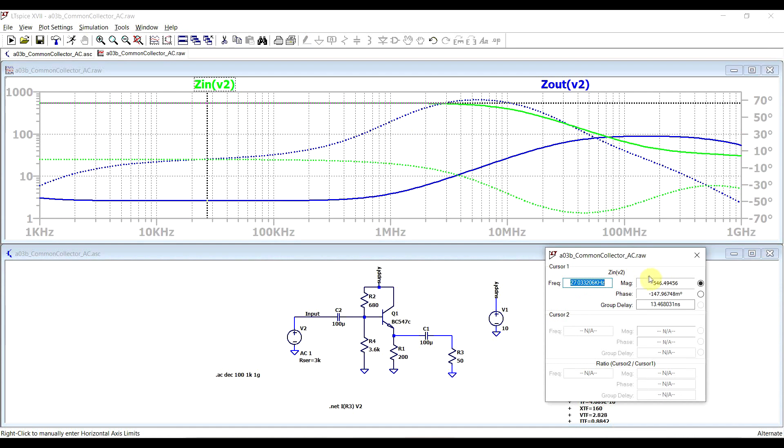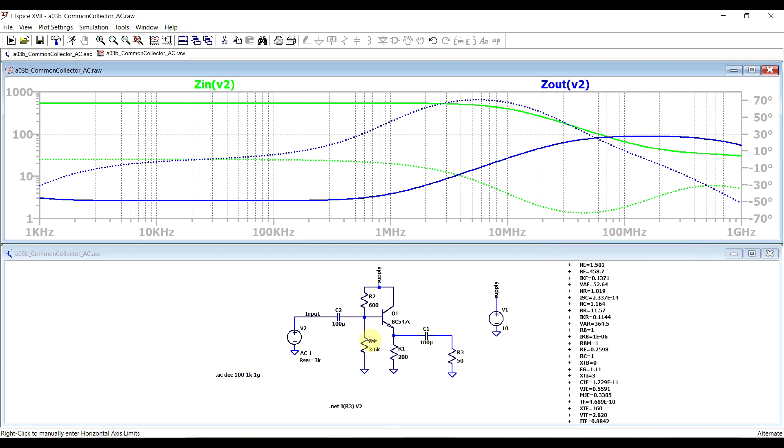We can see that our input impedance has dropped from the previous 4 kiloohms down to about 500 ohms, but also the output impedance dropped from the previous 7 ohms down to about 2.6 ohms. So with this new configuration, we're getting a lower input impedance and a lower output impedance.